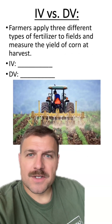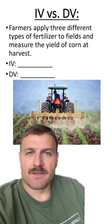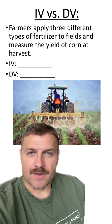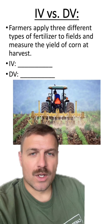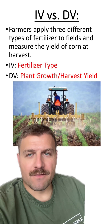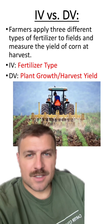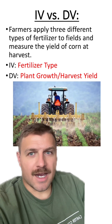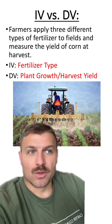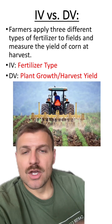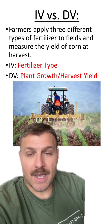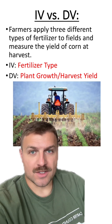Scenario one: farmers apply three different fertilizers to fields and measure the yield of corn at harvest. The independent variable is the fertilizer type, because the scientist or farmer is changing this variable. The dependent variable depends on the independent variable, so the plant growth or the harvest yield is going to depend on the fertilizer the farmer uses.